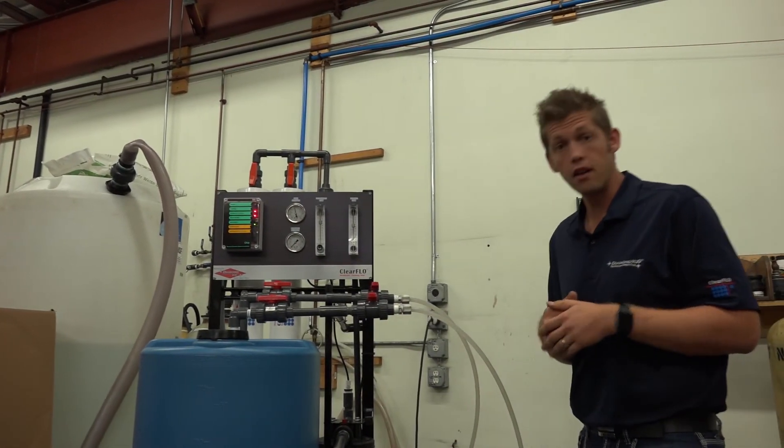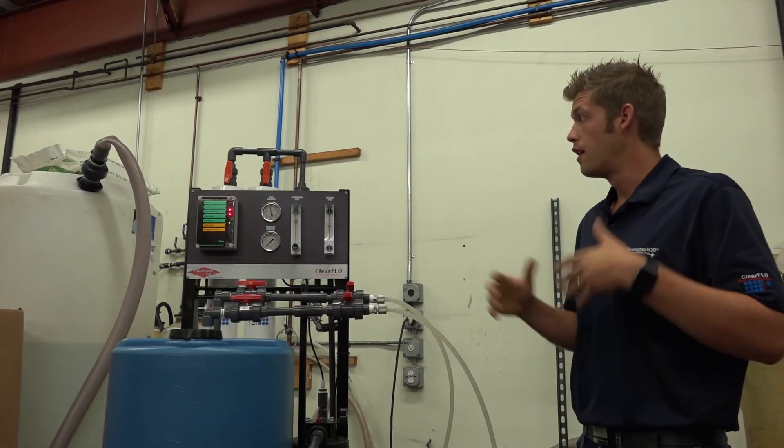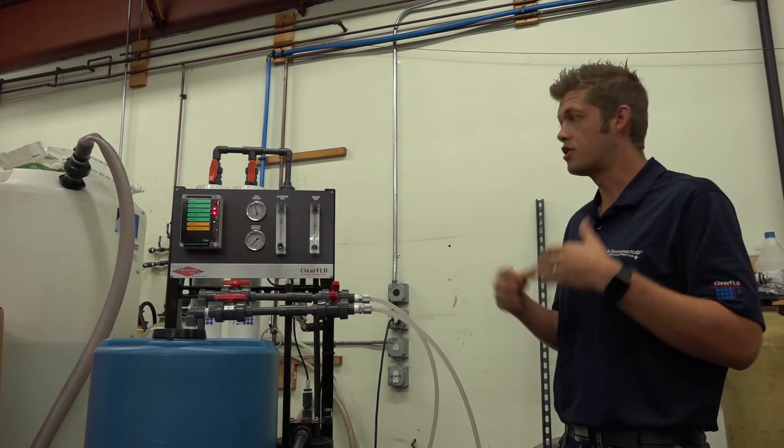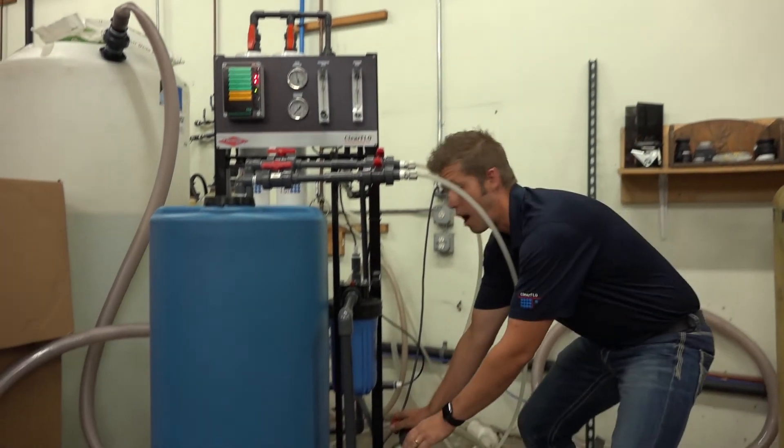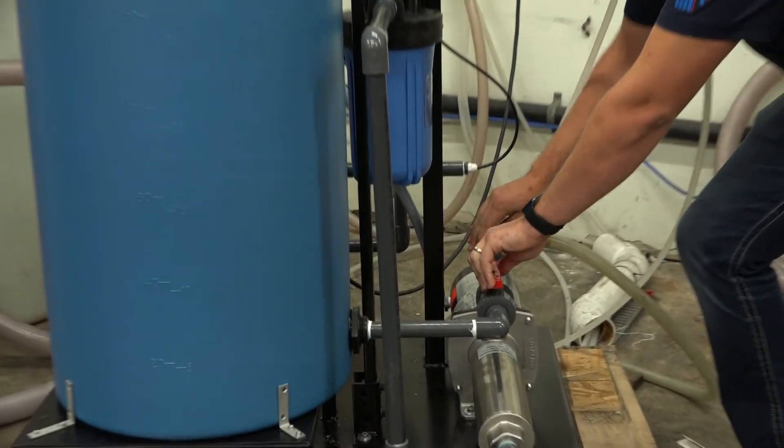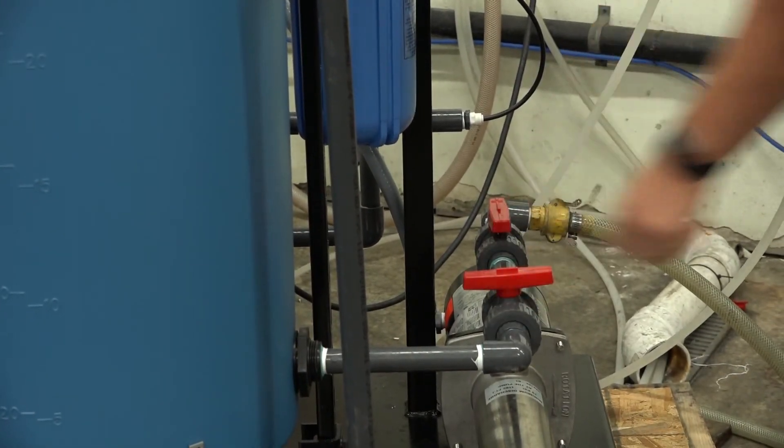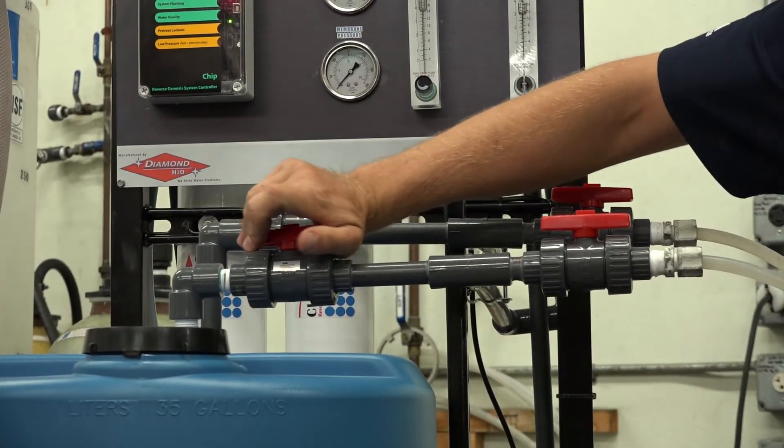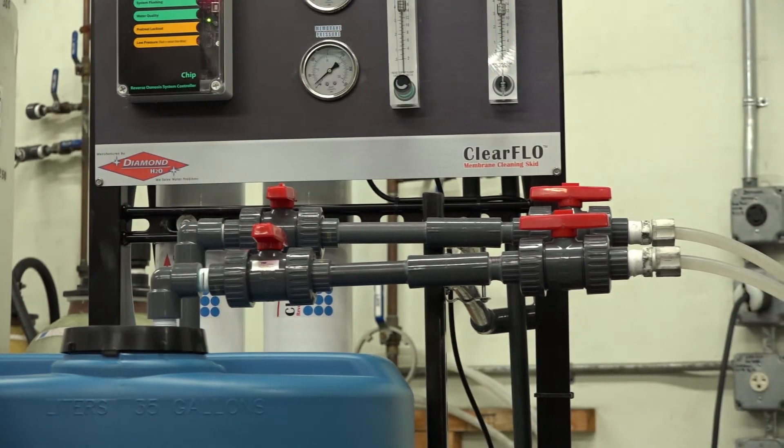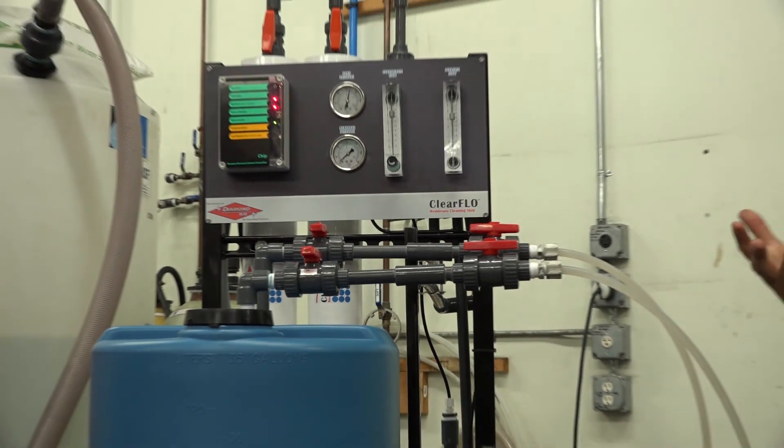Once that process is done, you're ready to flush the membranes out and test their performance. What you will do is you're going to open your feed valve and close off your tank valve. Open your drain lines, close your tank off, and then you're just going to allow it to run.